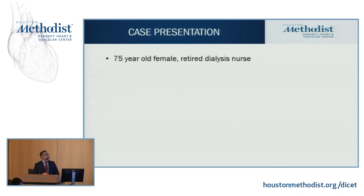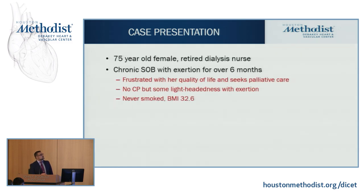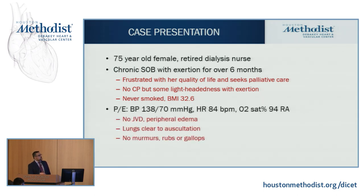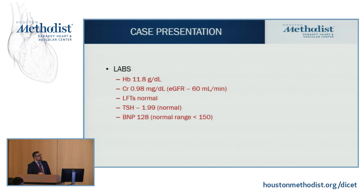The case: a 75-year-old retired dialysis nurse presenting with chronic exertional dyspnea for six months. She was frustrated with her quality of life and was seeking palliative care — she wanted an explanation for why she felt so poorly. No chest pain, but some lightheadedness with exertion. Never smoked. BMI 32.6. Physical exam: blood pressure normal, heart rate 84, oxygen saturation 94% on room air, no neck vein elevation, no peripheral edema, clear lungs, no murmurs. Labs: mildly anemic at 11.8, normal renal function with eGFR 60, normal LFTs, normal TSH, and normal BNP.